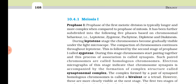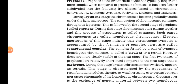During leptotene, it is the first stage where chromosomes become visible, formed from the chromatin network. Chromosomes are visible only during cell division; otherwise, in the interphase, they exist as a thread-like chromatin network. In leptotene, you can see the formation and slow compaction of chromosomes under the light microscope.